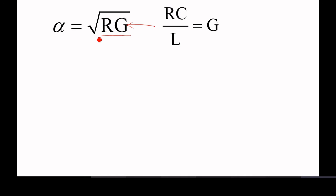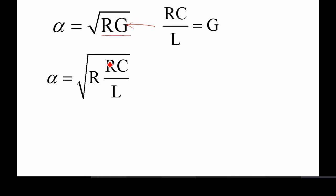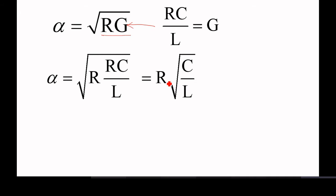Alpha is equal to square root of RG. You substitute in place of G, RC by L. So if you substitute RC by L, it is R square. R will come out, and we can write it as R into root C by L.